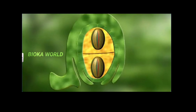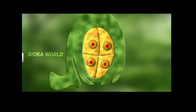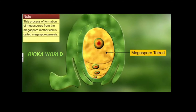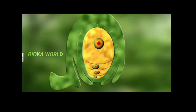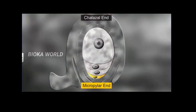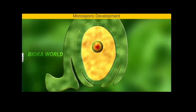The megaspore mother cell undergoes meiosis to form four megaspores, which arrange themselves in a linear tetrad. This process of formation of megaspores from the megaspore mother cell is called megasporogenesis. Of the four megaspores, usually the one near the chalaza end becomes functional, whereas the other three near the micropylar end degenerate. The functional megaspore enlarges and simultaneously undergoes mitotic division to form an embryo sac. This type of formation of an embryo sac from a single megaspore is known as monosporic development.